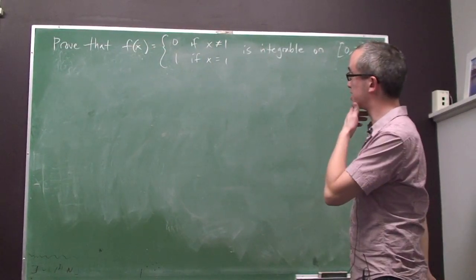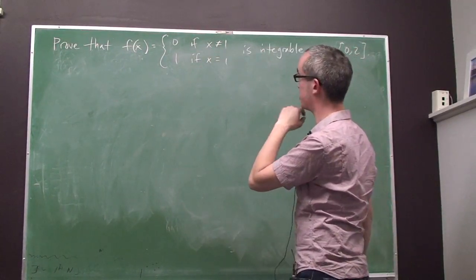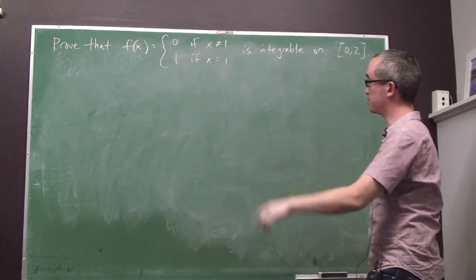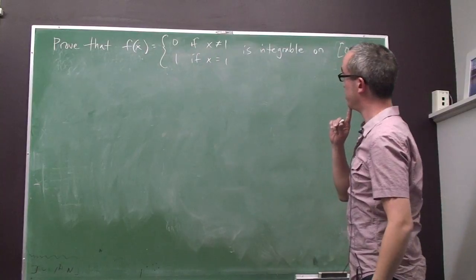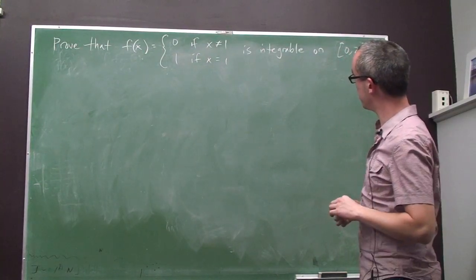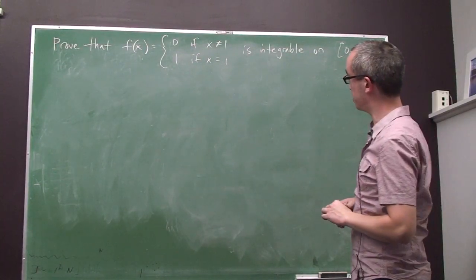Okay, so the problem we have today is we have this indicator function, f of x equals 0 if x is not equal to 1, and 1 if x is equal to 1. And we need to show that this is integrable on the closed interval from 0 to 2.